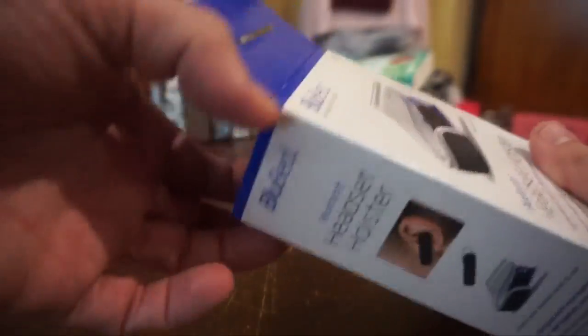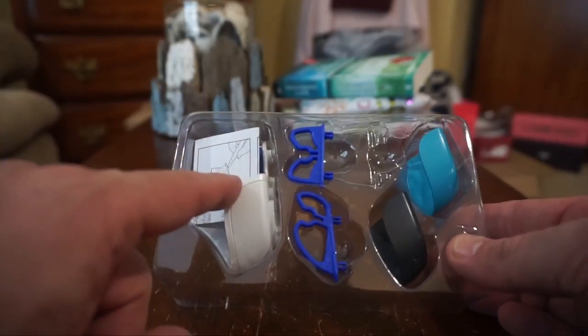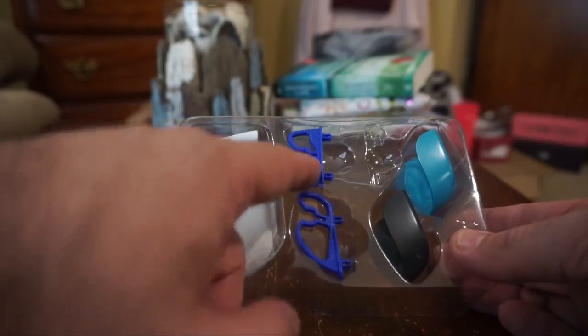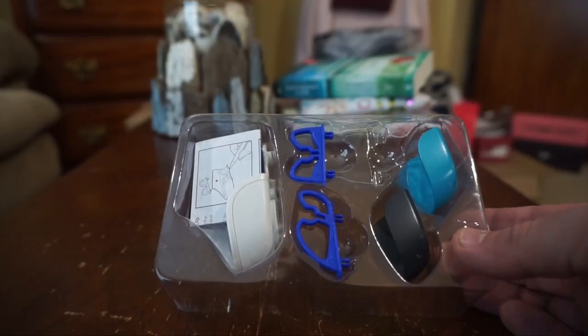Inside the packaging are a couple of things: the BluBed itself, three of these clips, and three face plates. The clips are each a different size and they're labeled A, B, and C.